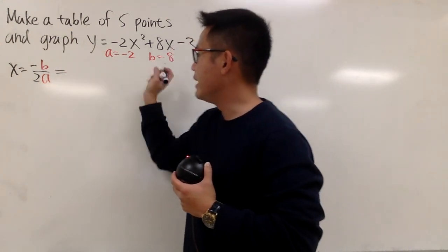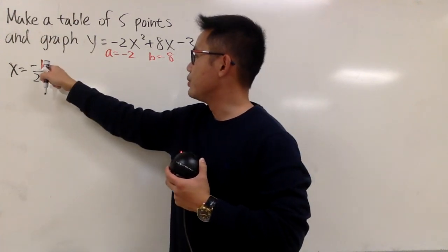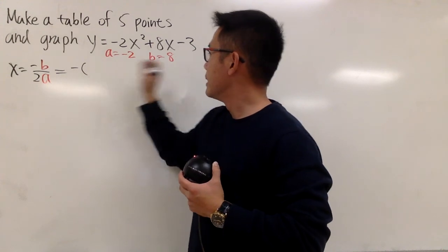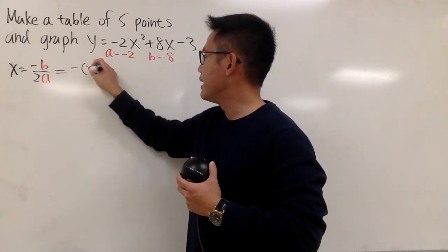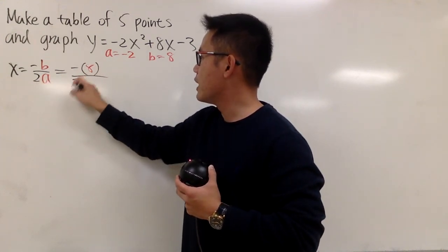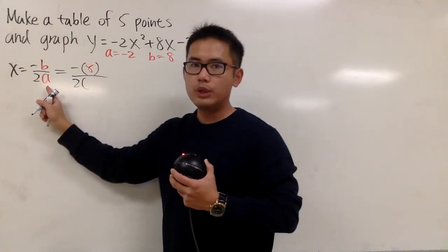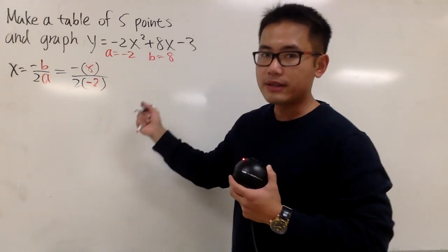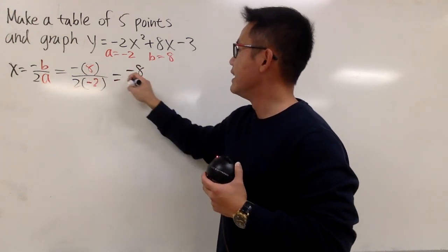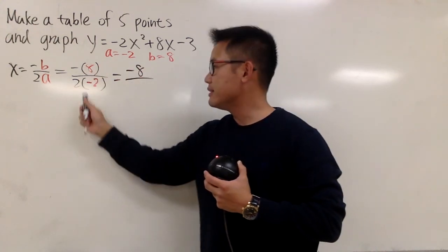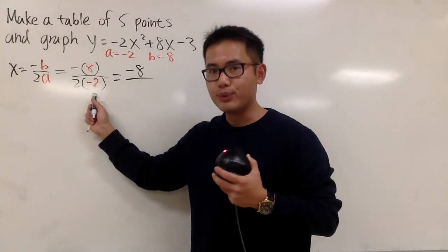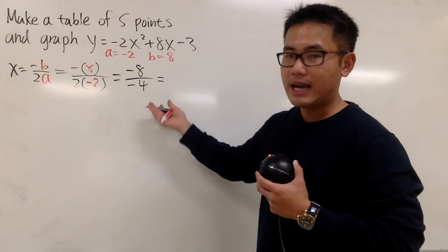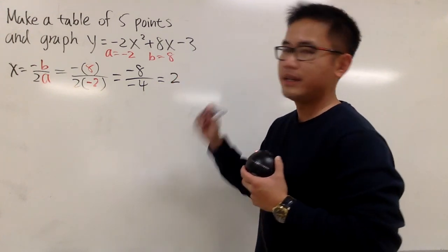Anyway, we plug this in. So plugging 8 into b, we have negative from this formula, and then b is 8. And then on the bottom, we have 2 times negative 2 into this a, like this. And now on the top, we have negative 8. And then on the bottom, this is 2 times negative 2, which is negative 4. And then when you reduce this out, you get a positive 2 at the end.